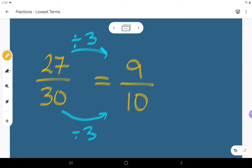When I look at 9 and 10, the only things I can divide 9 by are 3 and 9. The only things I can divide 10 by are 2, 5, and 10. None of those are the same, so that one would be in lowest terms.